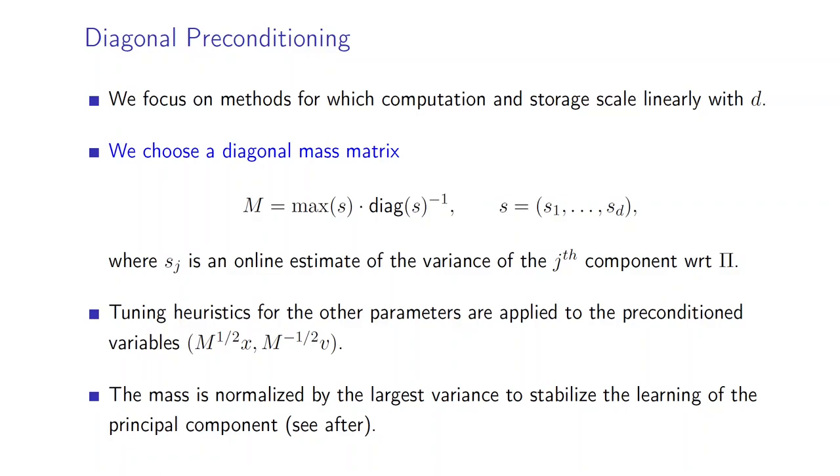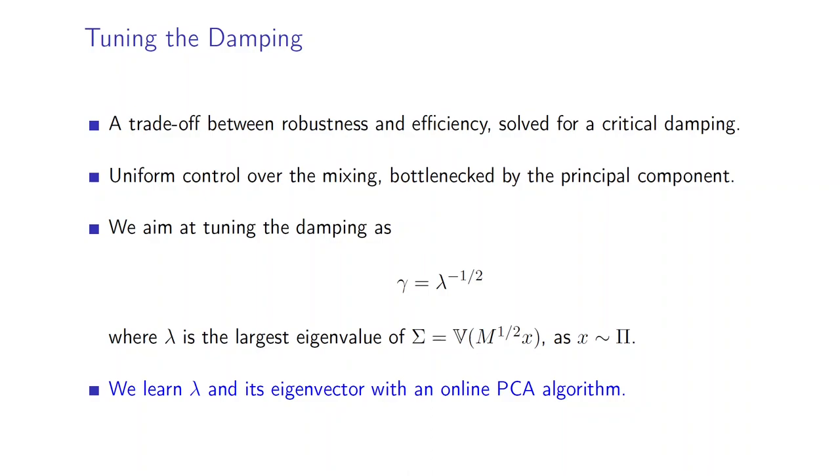We focus on methods for which computation and storage scale linearly with dimension d, which is why we choose a diagonal mass matrix for preconditioning, where S_j is here an online estimator of the variance of the j-th component with respect to π. There are other possibilities for preconditioning. Here we use the one that is used in Stan, and we simply normalize the mass with respect to the largest variance in order to stabilize the learning of the principal component that we will see after.